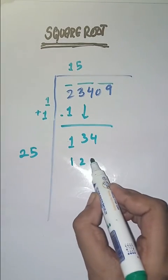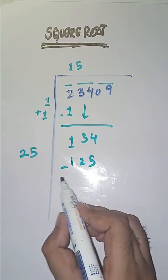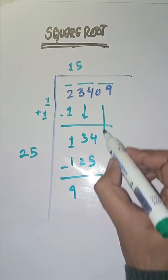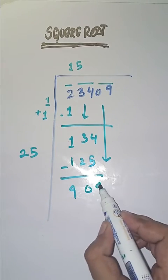Next pair we'll pass zero nine. We'll bring this down here. Here we will do twenty-five plus five which is equal to thirty.